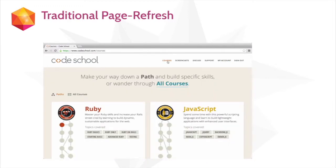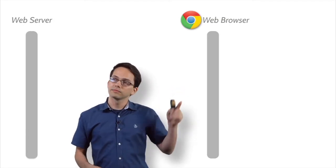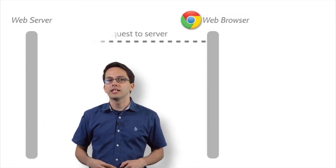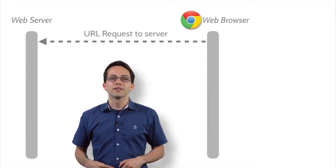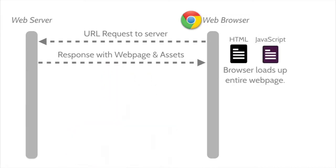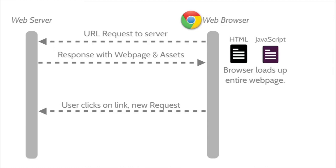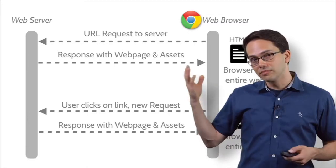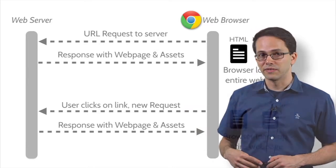But what's going on behind the curtains? Here we have our browser and our web server. Our browser initiates a request to the server, the server responds with the web page and assets — the HTML and JavaScript — and our browser loads up the entire web page. But when the user clicks on a link, it initiates a new request, and the server responds with the new web page and assets, and the browser loads up the entire web page again. Obviously, laid out like this, it's not quite efficient.